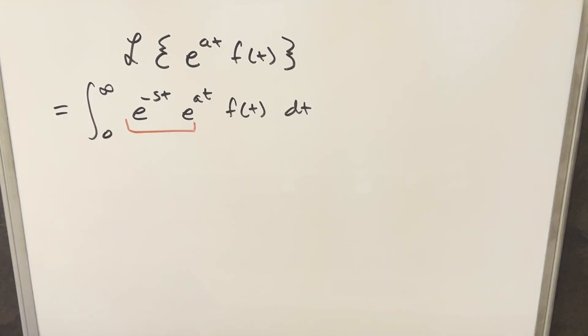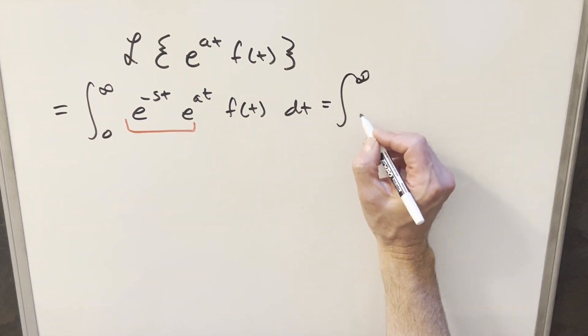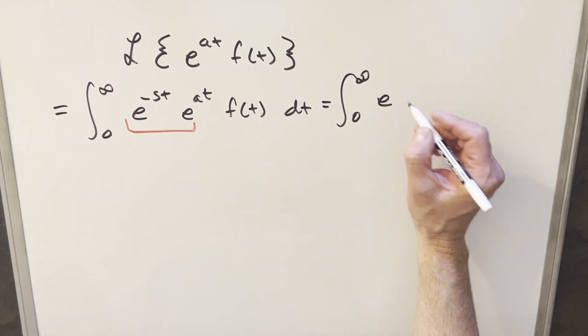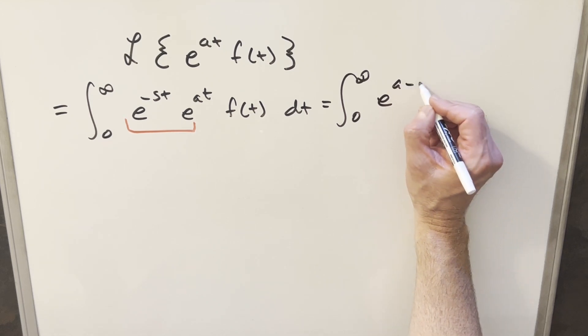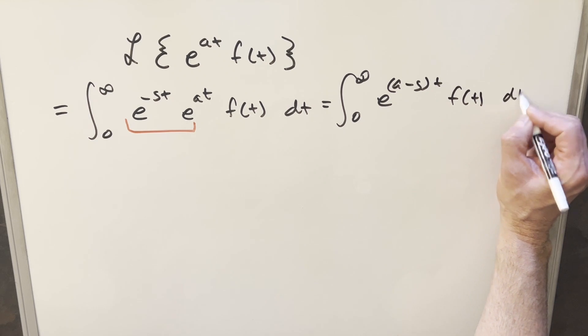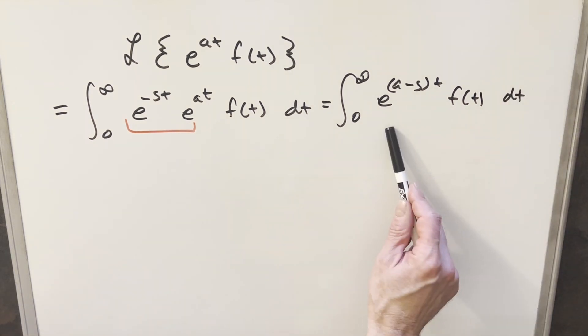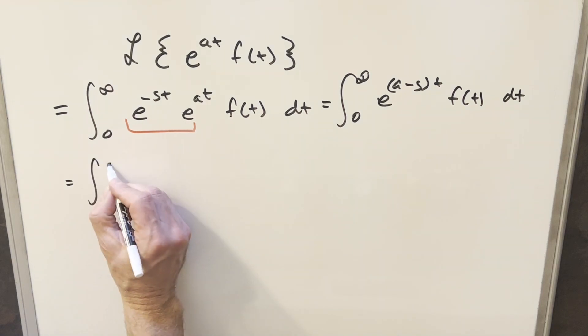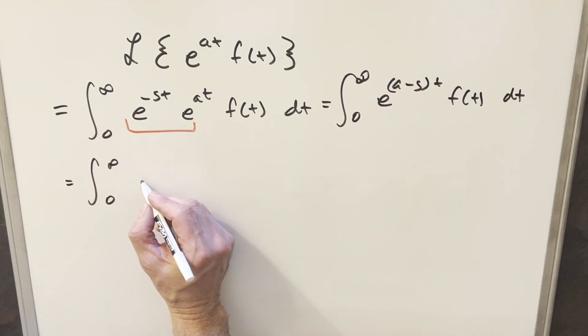So we'll write this as times e to the at and our f of t dt. But then of course we have the same base here. So I combine those two, multiplying those together. And so I can write this as e to the, but one subtle change I want to make instead of writing this as a minus s, what we can do is we can rewrite again, but factor a minus sign out of this.